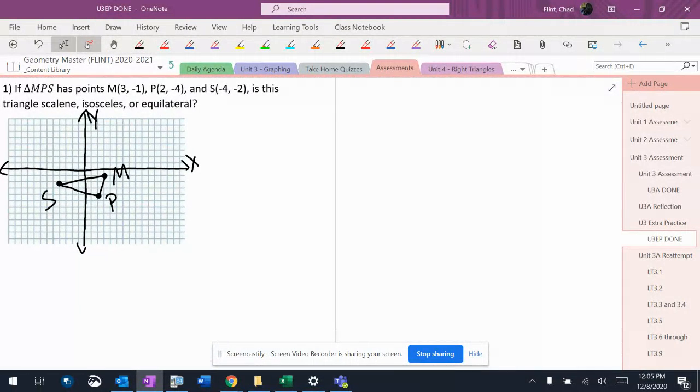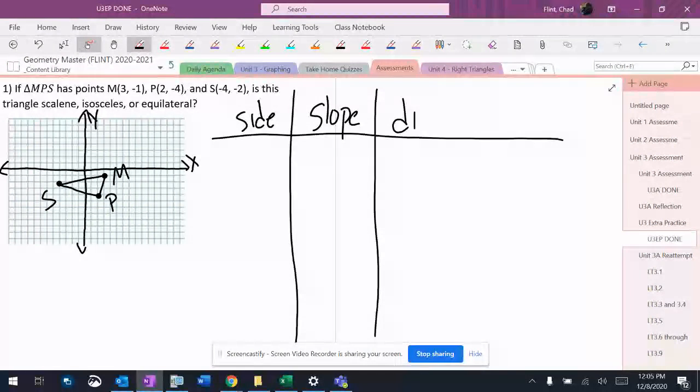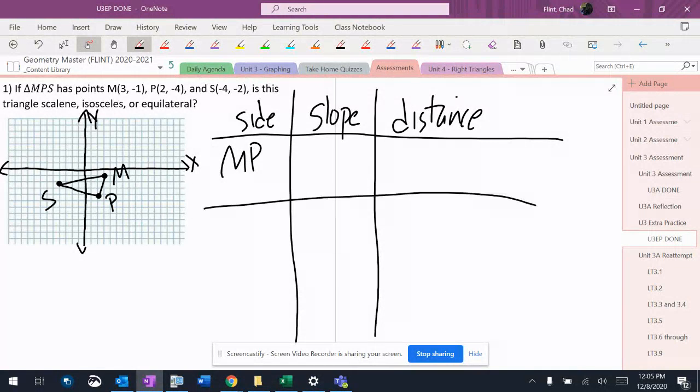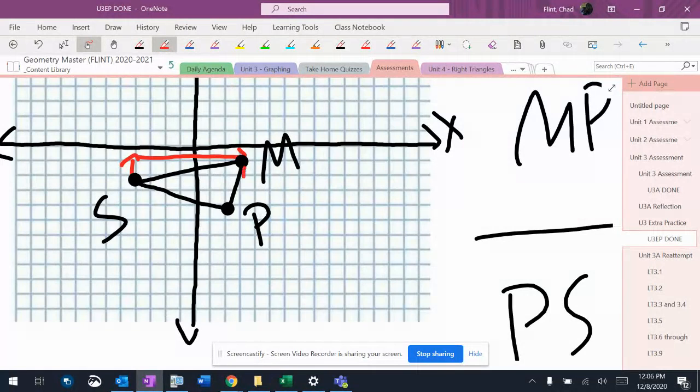I'm going to make a table over here with columns for side, slope, and distance. The sides are MP, PS, and SM. I have to label everything on my nice table. And I got it very carefully here. It's a pretty small triangle, so it's really easy to make a mistake.